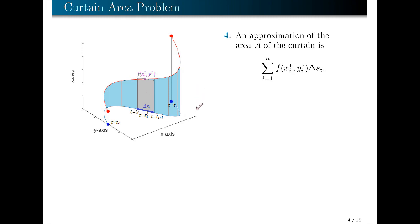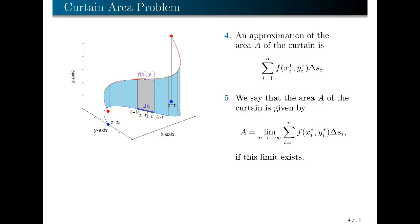Observe that as Δsᵢ becomes smaller, this rectangular region becomes a better approximation of the curtain portion. Hence, to obtain a better approximation of the area, we need to make the length of each sub-arc as small as possible. This is achieved by making n as large as possible. Hence, we say that the area A of the curtain is given by the limit of this summation as n approaches positive infinity, assuming that this limit exists.